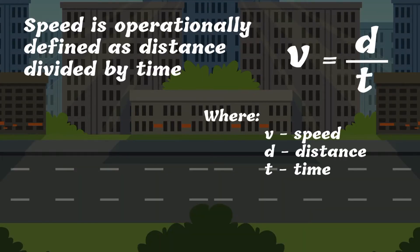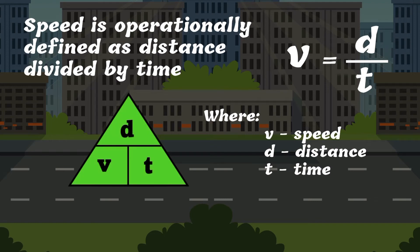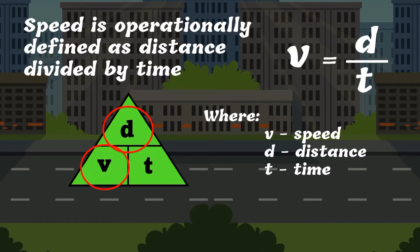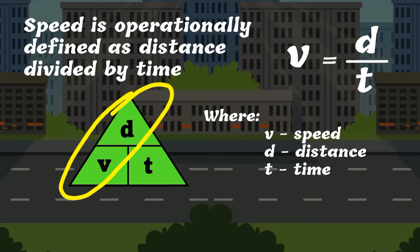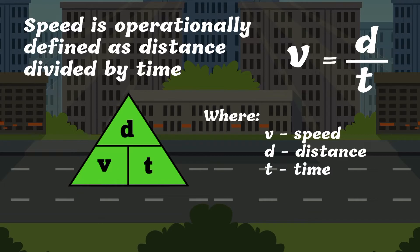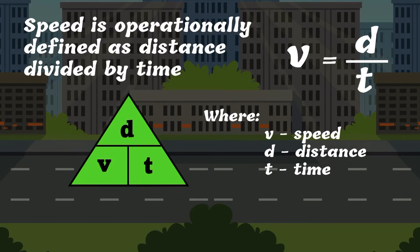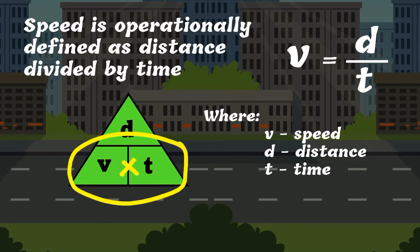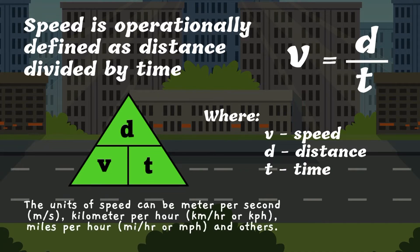How do we calculate speed? Speed is operationally defined as distance divided by time. To calculate how fast an object is moving, this equation must be used. The formula for speed is distance divided by time. If the given is distance and speed and we are looking for time, we can use the formula distance divided by speed. If the given is speed and time and the unknown is distance, we can use the formula speed multiplied by time. Again, the unit of speed can be meter per second, kilometer per hour, or miles per hour.